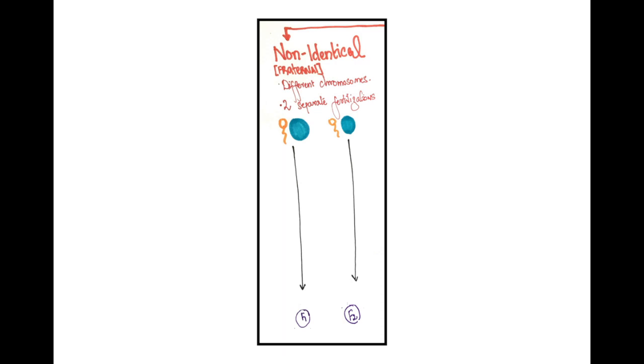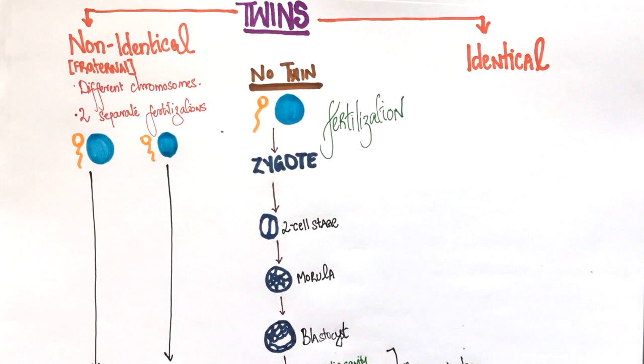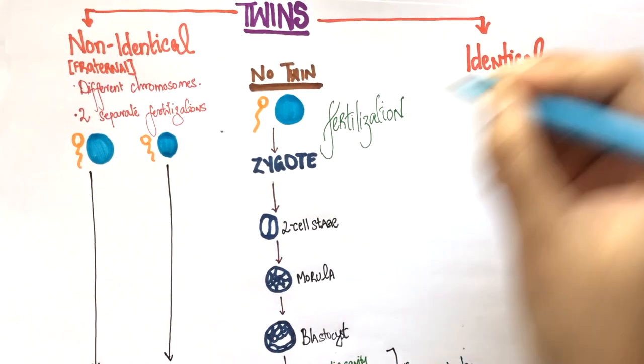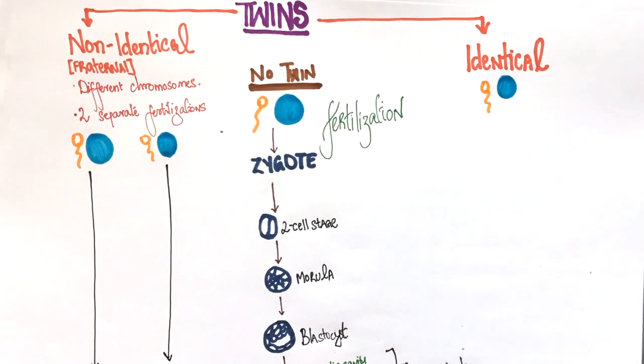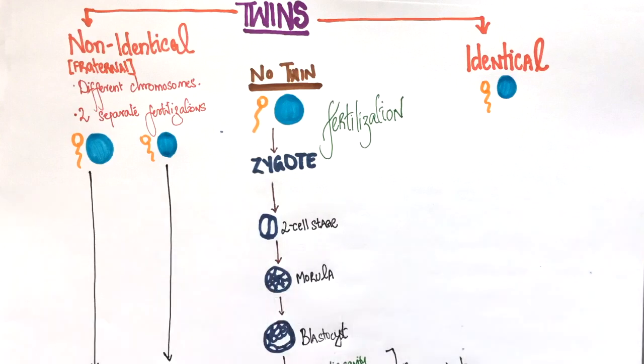These two twins will have their own placenta and their own amniotic sac. Twins which are formed by the same fertilization are identical since they are formed by the same sperm and the same egg. There are different kinds of identical twins which we will address in the next question.